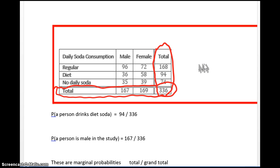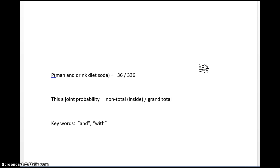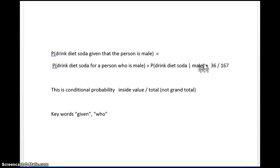How many males are there? Right here — it's 167. Notice we're not using the grand total of 336 anymore; we're only using the number of males for the denominator. How many of the males drink diet soda? 36. So the probability of drinking diet soda given the person is a male is 36 over 167. This is called conditional probability, where you're not looking at all participants but only a subset. The denominator is a total but not the grand total, and the numerator is an inside value. Key words indicating conditional probability are 'given' or 'who.'